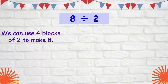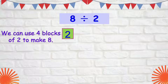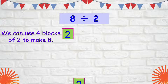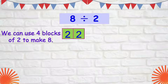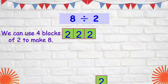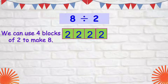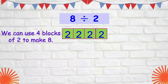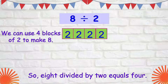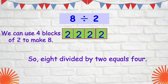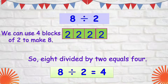We can also use blocks. Each block represents 2. So: 2, another block makes 4, we need more — that's 6, and one more makes 8. That means we used 4 blocks of 2 to make 8. So 8 divided by 2 equals 4.